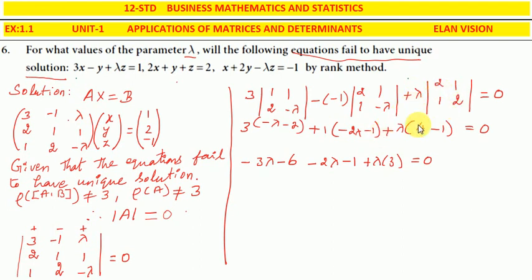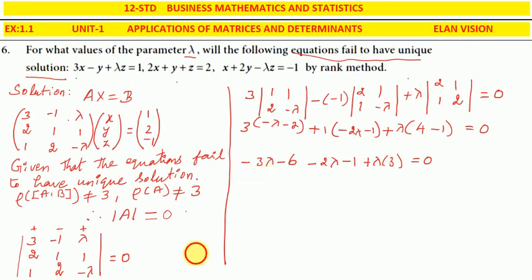So: 3 times (1·(-lambda) minus 2·(-lambda)) minus (-1) times (2·(-lambda) minus 1·1) plus lambda times (2·2 minus 1·1). That gives 3(-lambda - 2) minus (-1)(-2lambda - 1) plus lambda(4 - 1). Combining: -3lambda - 6, minus 2lambda - 1, plus 3lambda equals 0.